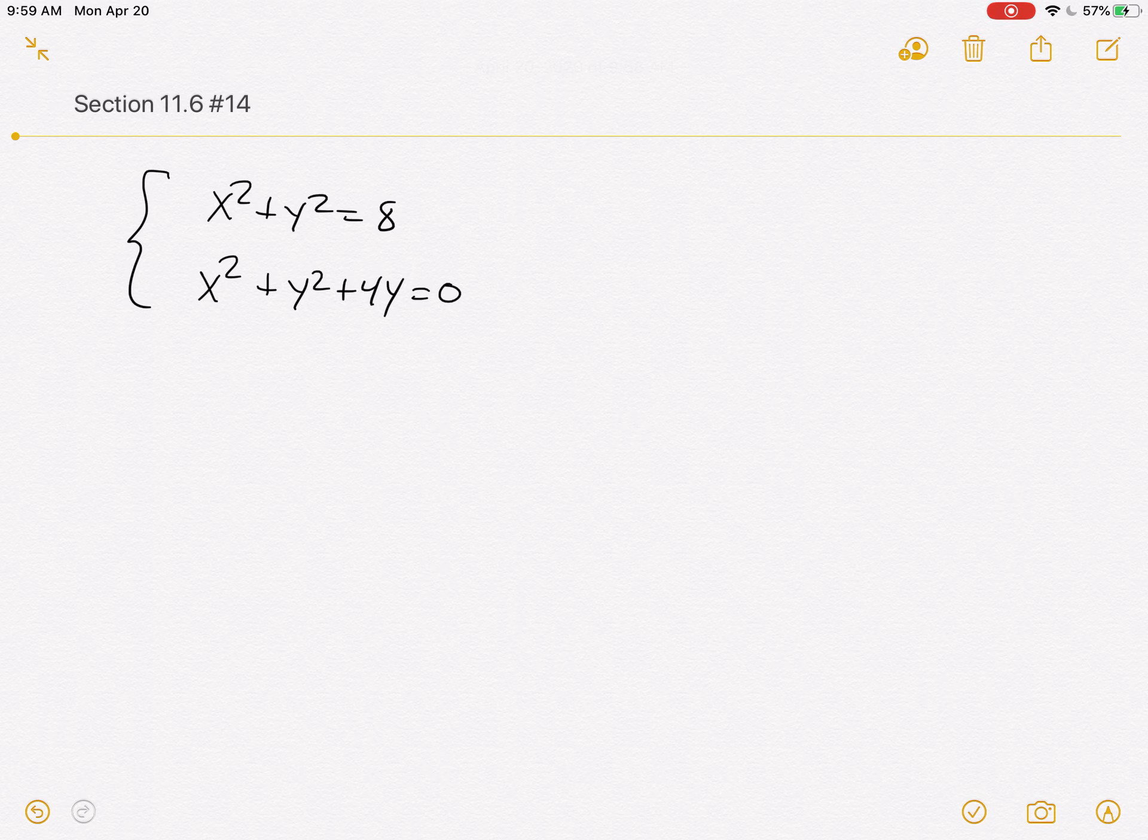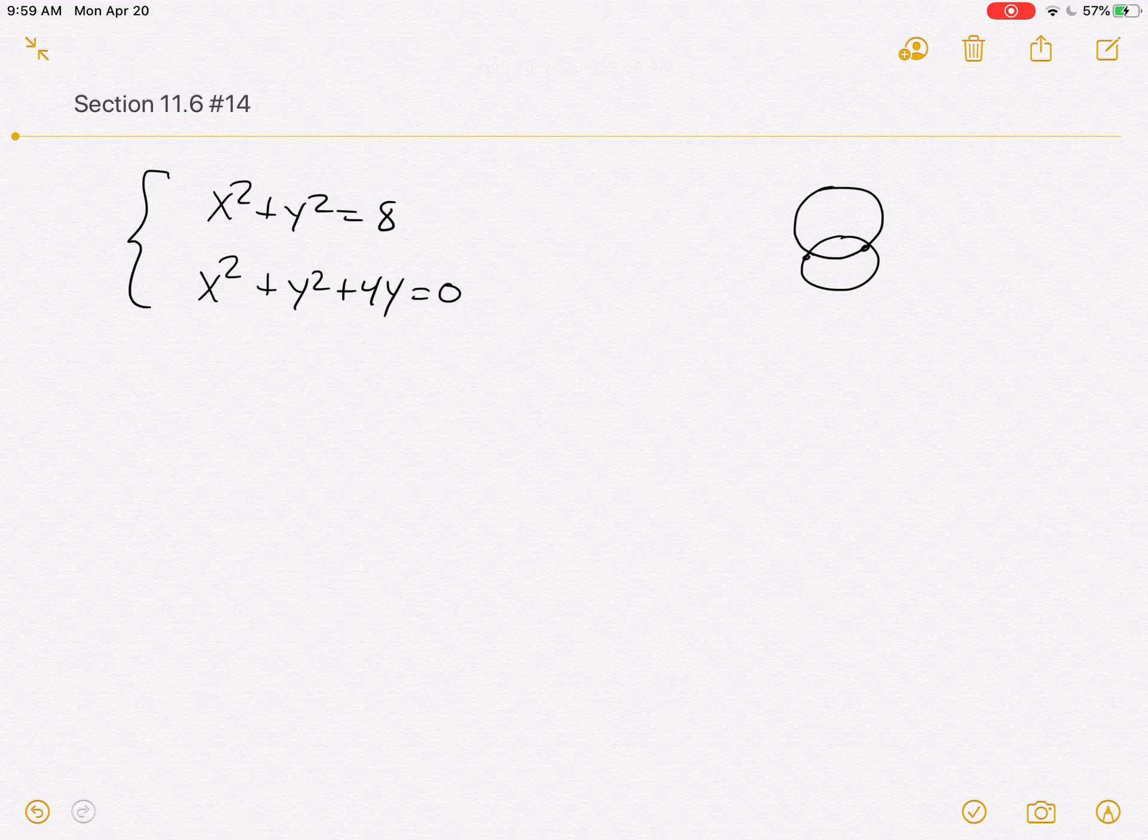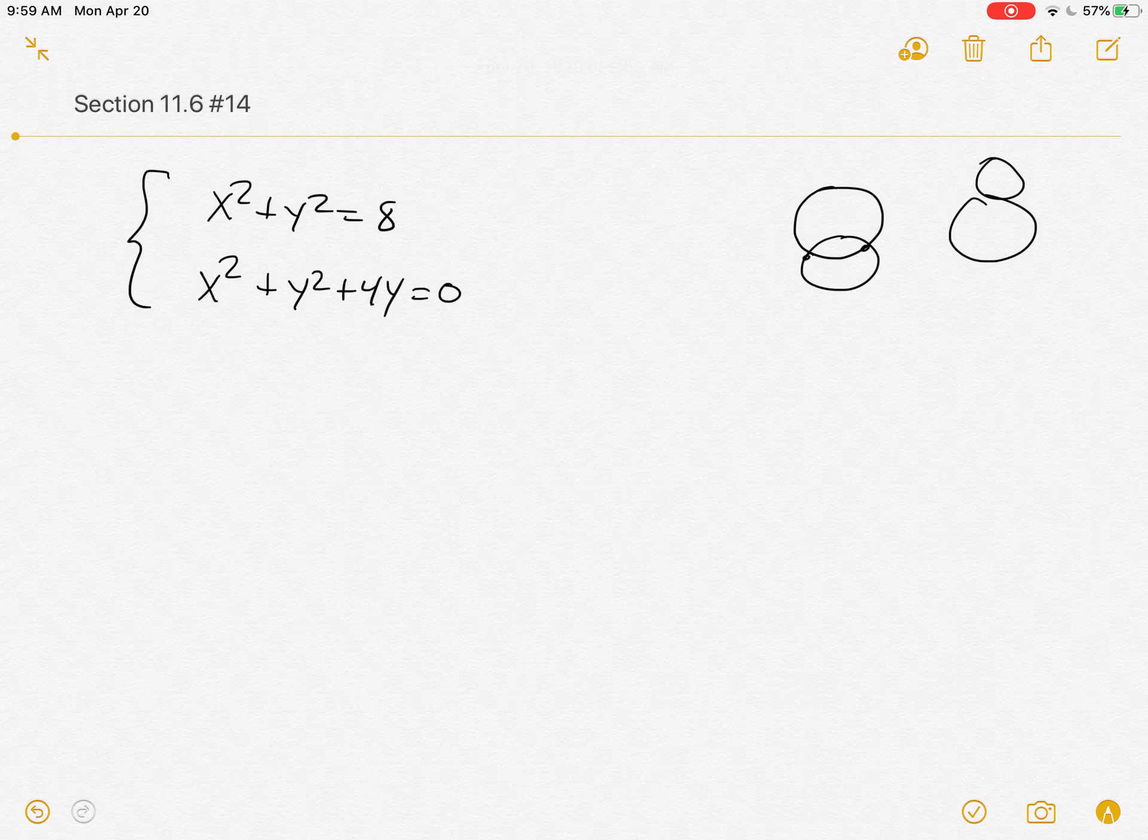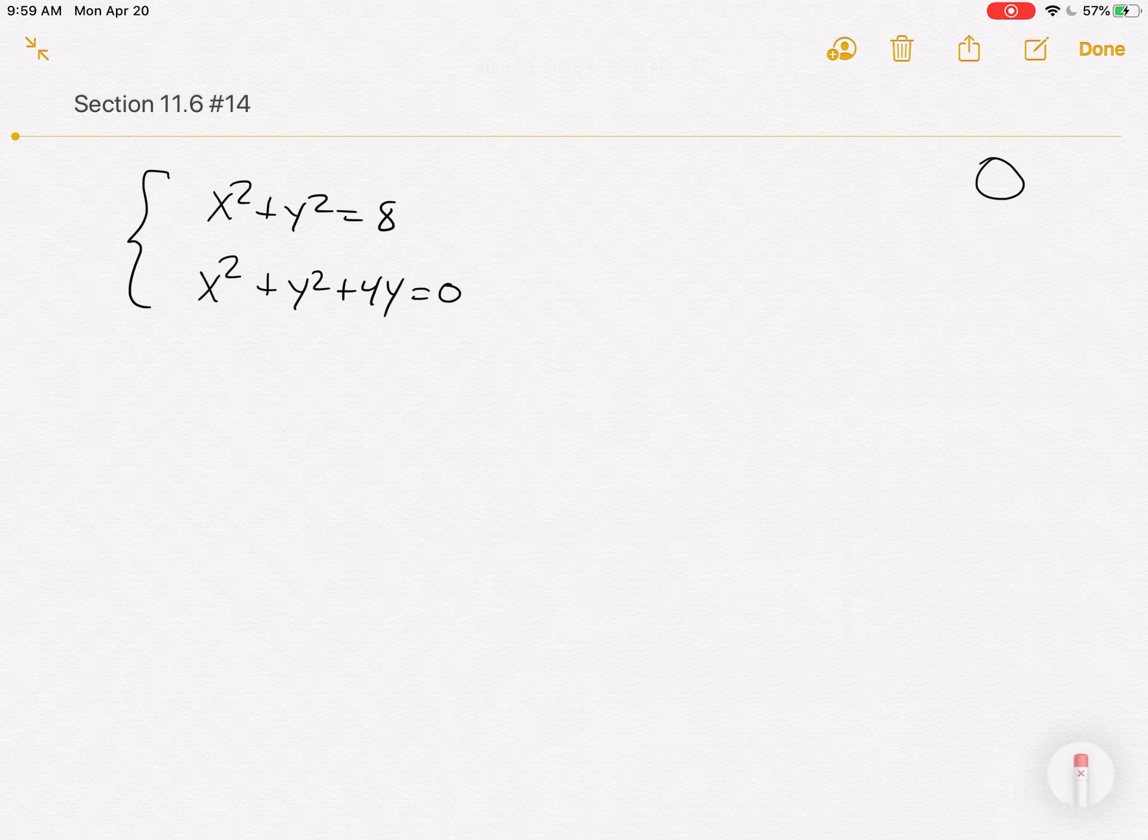Two circles intersecting could happen in a lot of ways. The most common way is to have two points of intersection. They're definitely not the same circle, so that would be an infinite number. But you could have them touch in one place, right? So there's lots of different ways. But more than likely, they're going to have two. Or could they have more than two? I don't think so, if they're just circles. But let's go see how many they have.